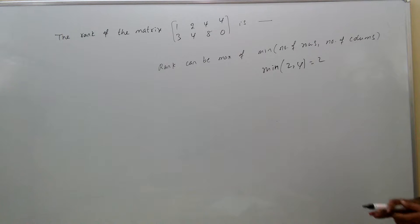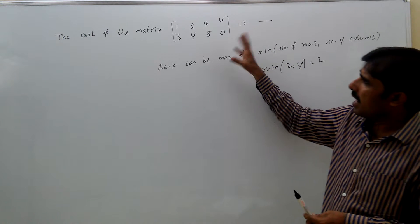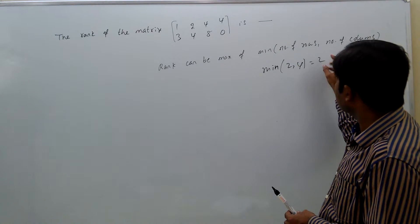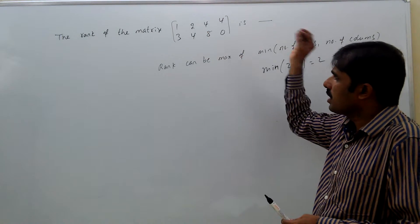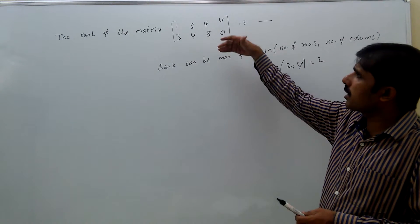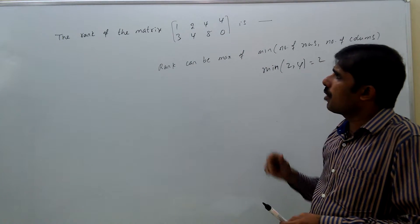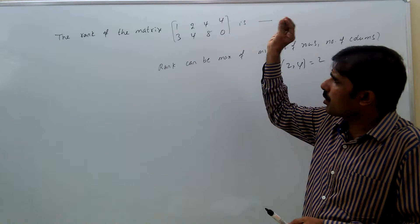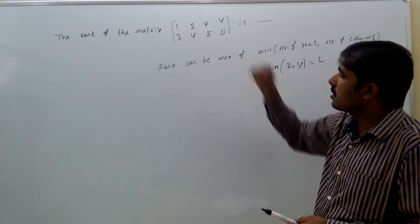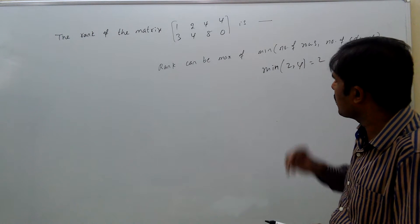Rank can be maximum of 2. That means we can have at most a second order determinant. We cannot have third order or fourth order determinants from this matrix. That is why rank can be maximum of 2 only.